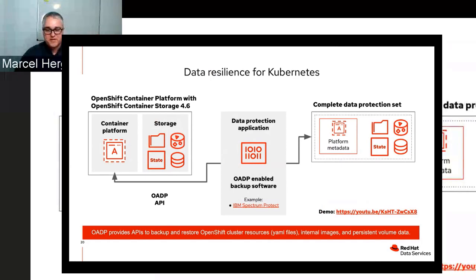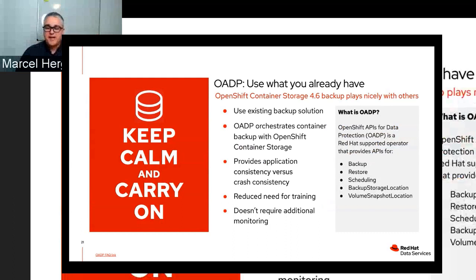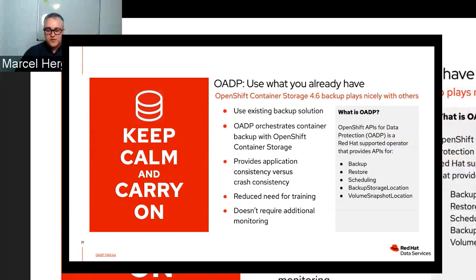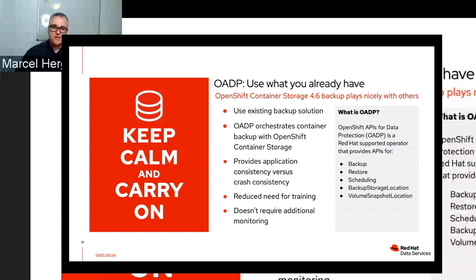With OADP you can use what you already have — it works with your existing data protection application and orchestrates container backup with OpenShift Container Storage. You don't have to worry about snapshots; it's all abstracted away by OADP, which integrates with your backup application. It provides application consistency versus crash consistency — a snapshot alone gives you crash consistency, but OADP combined with your backup application gives you application consistency. This also reduces the need for additional training and monitoring since it uses what's already in place.